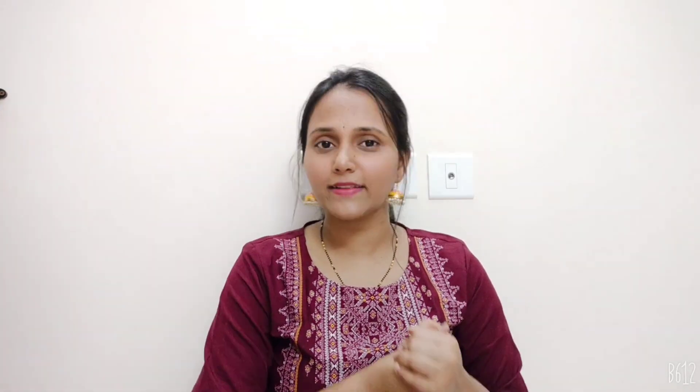The second phase is from day 15 to day 30. In phase 2, the seeds are pumpkin seeds, sesame seeds, and sunflower seeds. In these four seeds — including flax seeds from phase 1 — there are many vitamins, selenium, magnesium, zinc, omega-3, omega-6 fatty acids, and antioxidants. So there are many vitamins in these seeds, and they support proper hormone production.